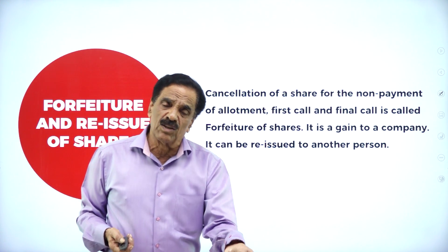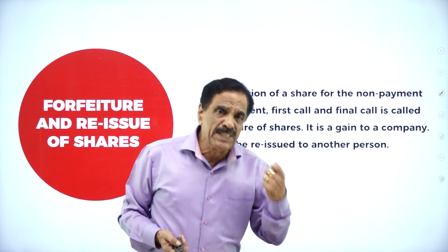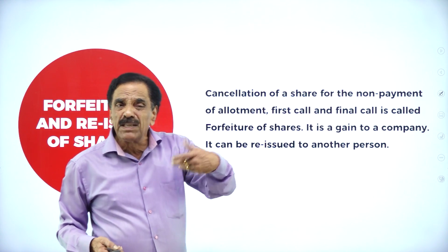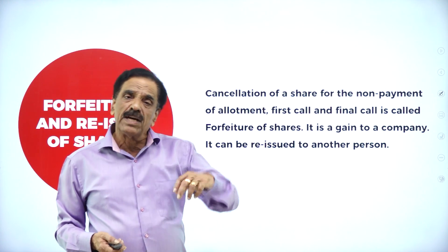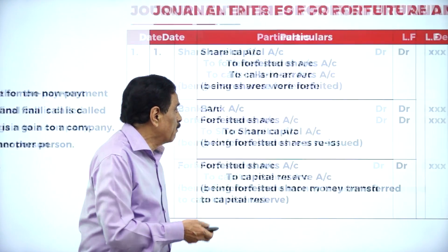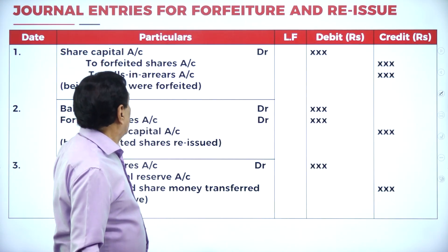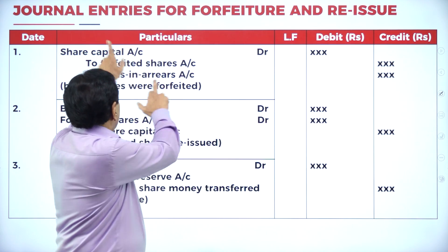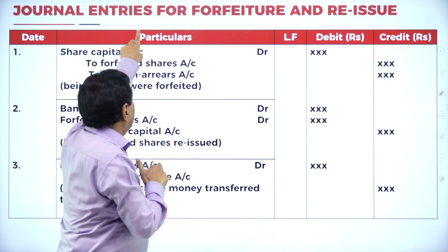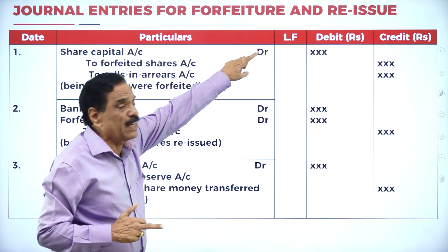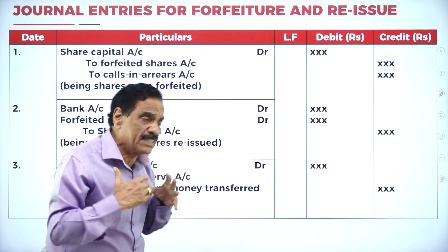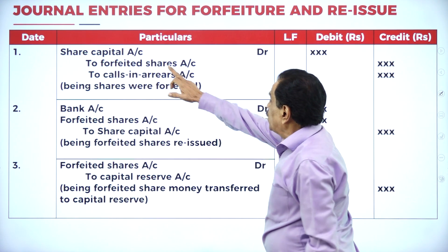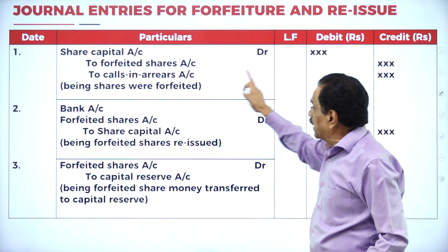If X is a shareholder and he could not complete either the first call or final call, the share can be re-issued to another person who can pay the money. Now regarding the general entries for forfeiture and re-issue: what is the first entry? Share Capital Account debited.